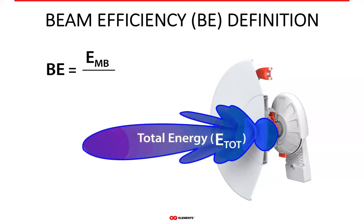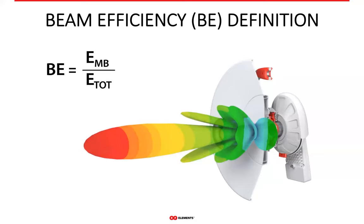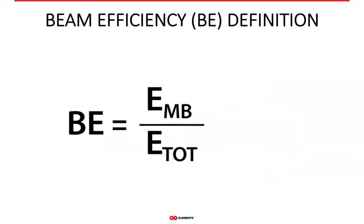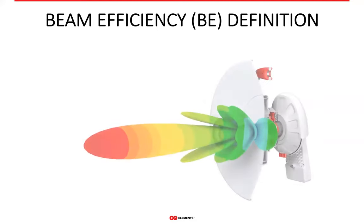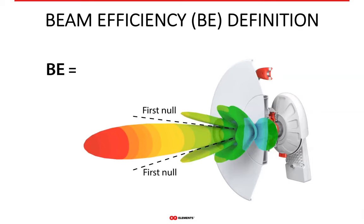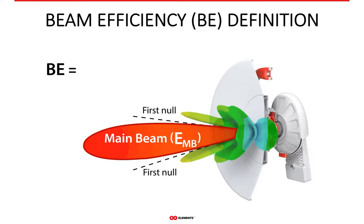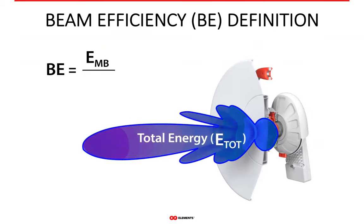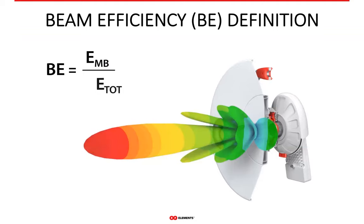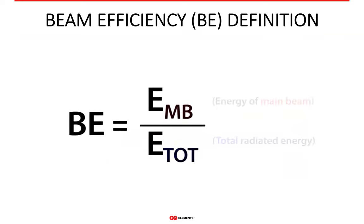We can get the percentage of energy in the side lobes by subtracting beam efficiency from 100%. This gives you a very straightforward way to have a quantifiable discussion about antennas. Rather than vague statements that one antenna has a lot of side lobes and another doesn't, you now have a physically measurable variable that clearly states what amount of the energy an antenna radiates is in the side lobes.